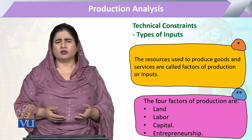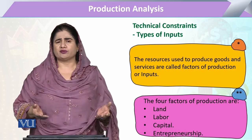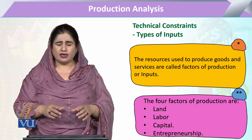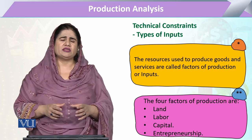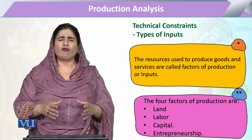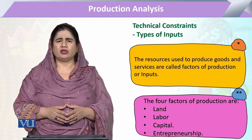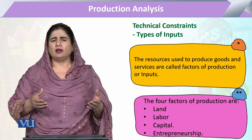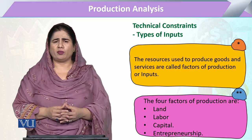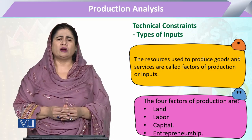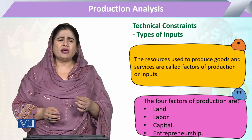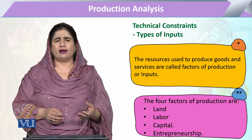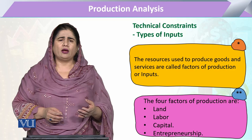Now, these inputs are of various forms. There are basically four main types of factors of production that have been utilized in classical economics or microeconomics. Number one, the most fundamental factor of production that is utilized is land.